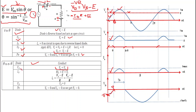Applying KVL in the loop gives i0·R plus E equals VS, so i0 equals (VS minus E) / R. Since V0 equals VS, we can also write i0 equals (V0 minus E) / R. When the diode is forward biased, the drop across it equals 0, so Vd equals 0. Since both V0 and i0 are greater than 0, power P0 is greater than 0, meaning power flows from source to load.